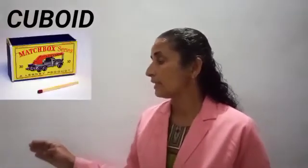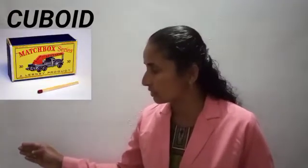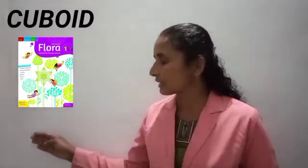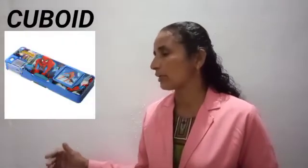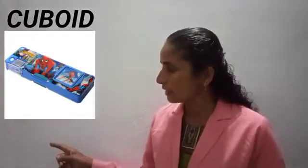The next one is cuboid. C-U-B-O-I-D, cuboid. This is a cuboid. We can see many things around us that are shaped like a cuboid — for example, a matchbox, your textbook, and your pencil box. All of these are the shape of a cuboid. What is the spelling of cuboid? C-U-B-O-I-D, cuboid.